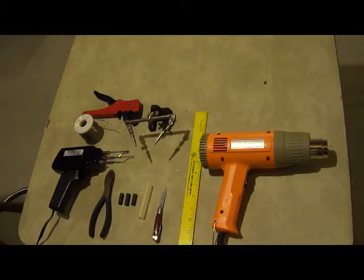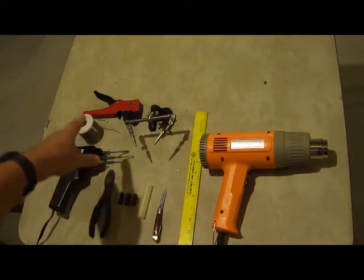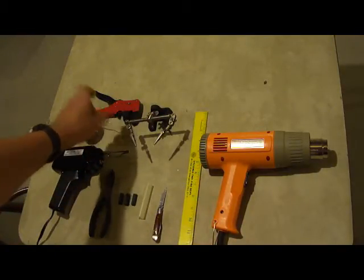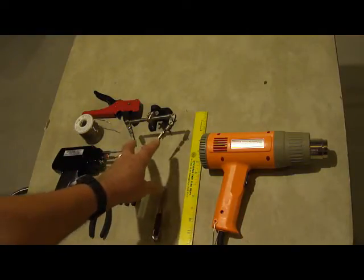You'll need a ruler or measuring tool, you'll need diagonal cutters, also known as side cutters or dikes, and you need a sharp knife that'll cut the jacket of the wire that we're going to be cutting.